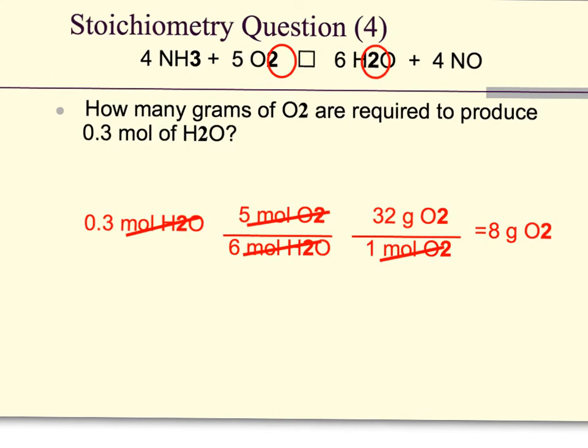On this sample problem, we have our balanced equation. We have 0.3 moles of H2O. We are asked to find grams of O2. Therefore, H2O will be chemical A, O2 will be chemical B.